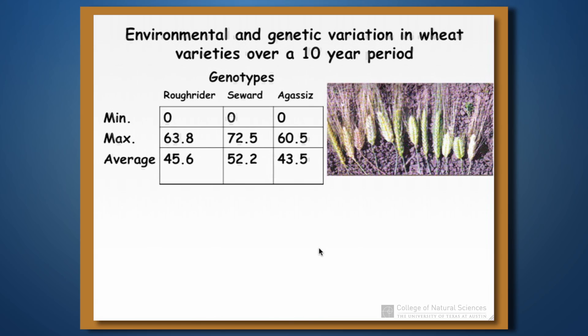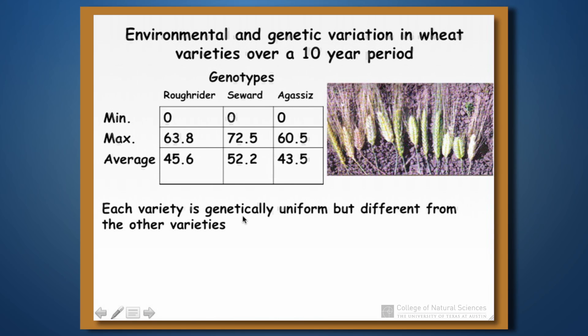Let's look at an example using three varieties of wheat — Roughrider, Seward, and Agassiz. Each variety is genetically uniform within itself, but different from the other varieties. So all individuals in Roughrider are exactly the same genetically, but they're different from Seward, for example.